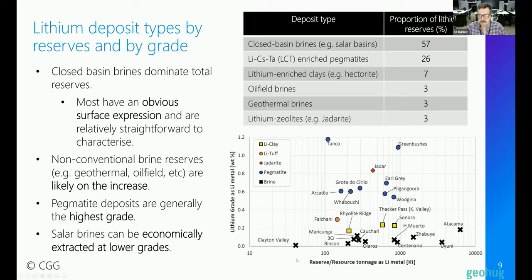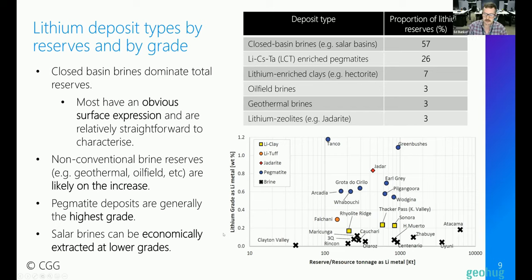The grade versus tonnage comparison shows that salar brines have quite low grades but deposits like the Salar de Atacama and Salar de Uyuni have some of the highest total tonnages. Lithium clay systems are relatively low grade compared to hard rock systems. Hard rock systems have significantly higher grades and pretty high tonnages as well. It's interesting to compare all those different grades versus tonnages across deposit types.